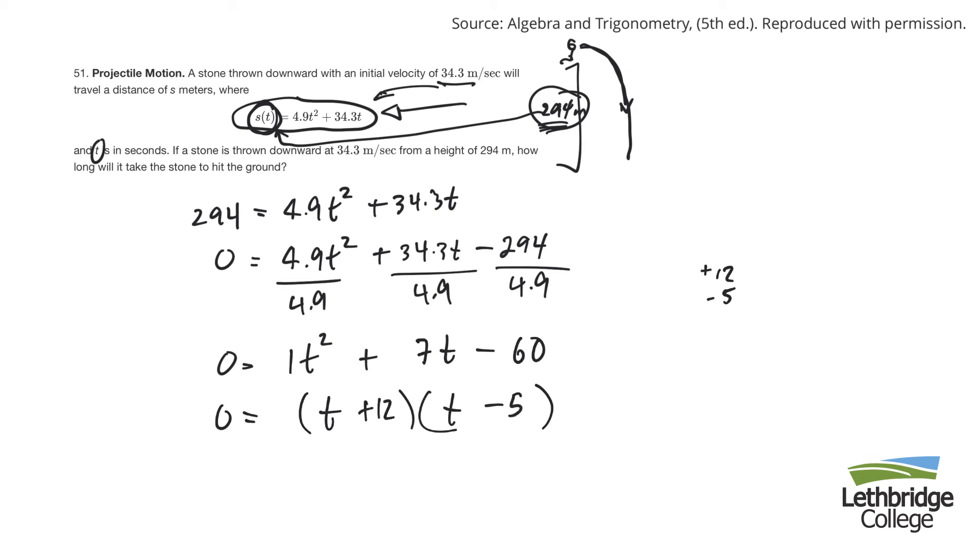So now the zero principle, something times something is 0. So T plus 12 is 0, or T minus 5 is 0. So here T equals minus 12, or T equals positive 5.